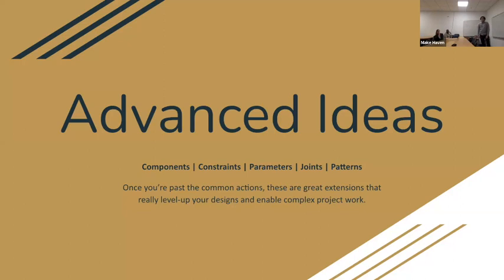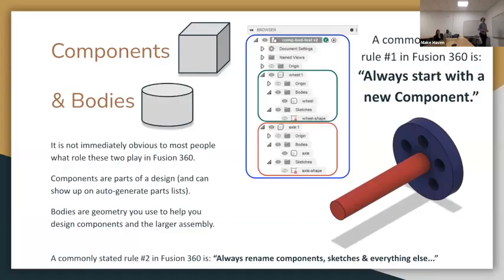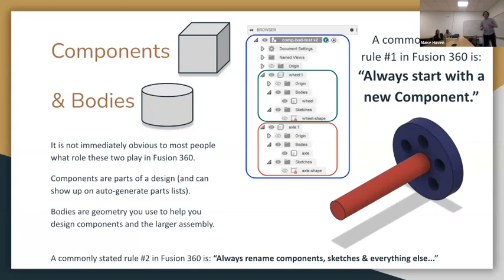With componentry, you can actually bring things together, but you can also generate parts lists so that you remember everything you need to create an assembly — essentially create a shopping list of what you have to make or get in order to build something that you've modeled.